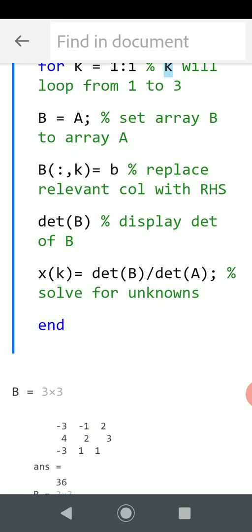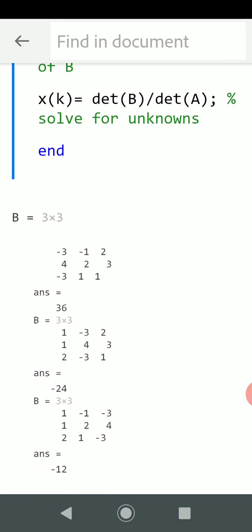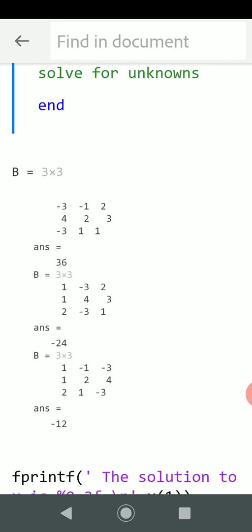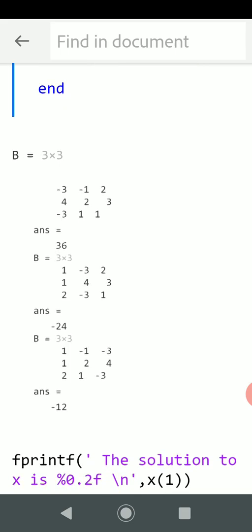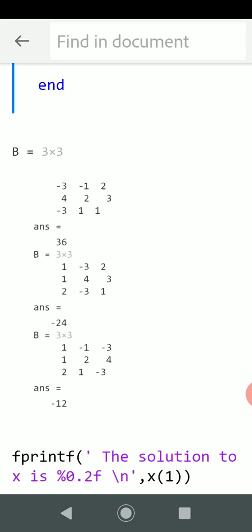B, that is det of large B, and then we get x(k), and that's the x of 2. And that's det(B) over det(A). And we look down here, we see for the second B it's 1, -3, 2; 1, 4, 3; and 2, -3, 1. So